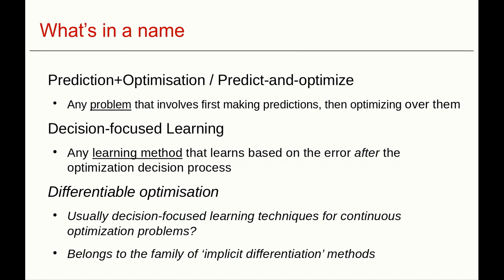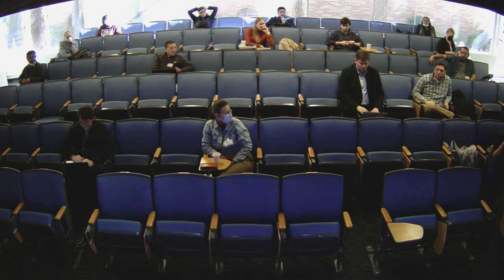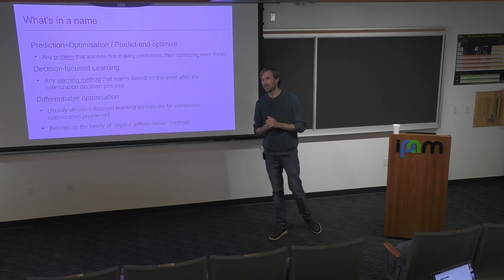Is there agreement or disagreement on this? When we say continuous, we mean like the constraints are smooth functions with some curvature — because you can model discrete optimization as an LP, for example. Someone might call an LP a continuous optimization problem. Here I call an LP a continuous optimization problem — when the decision variables are continuous.